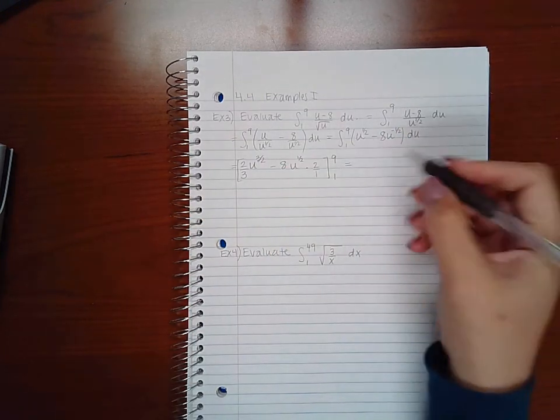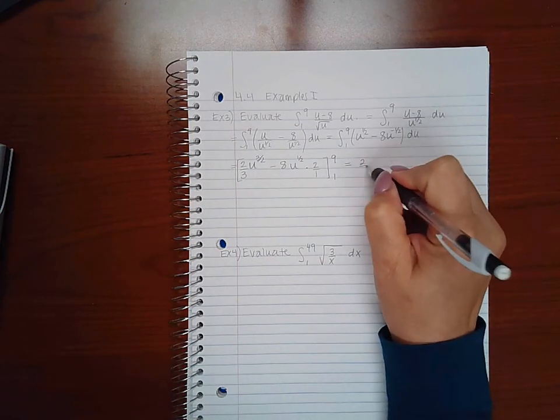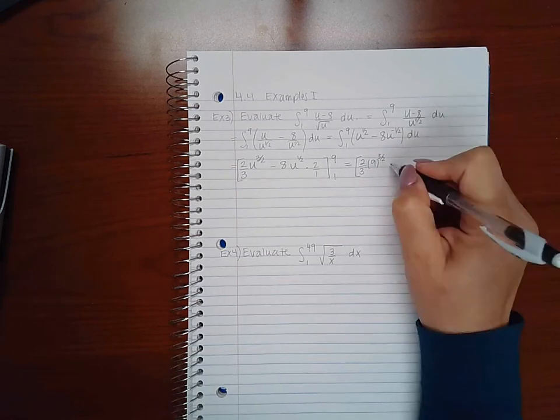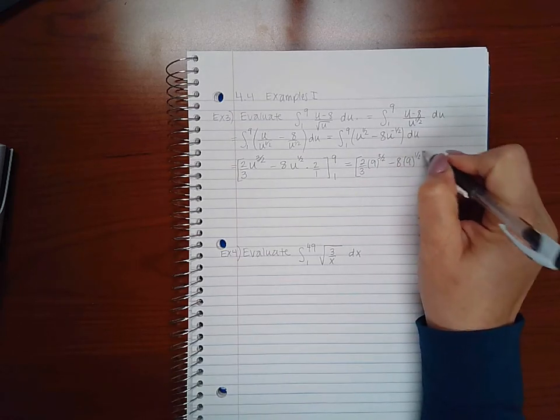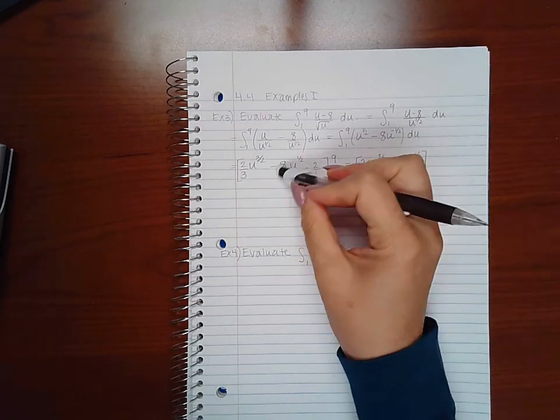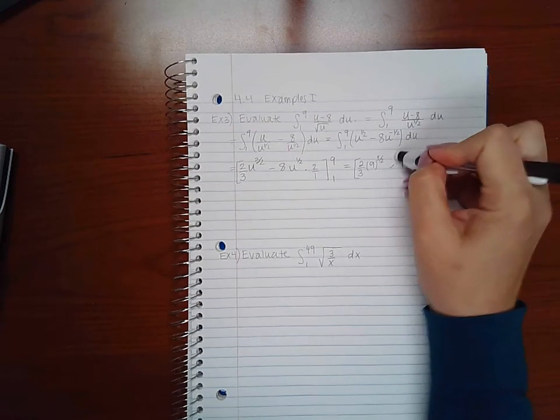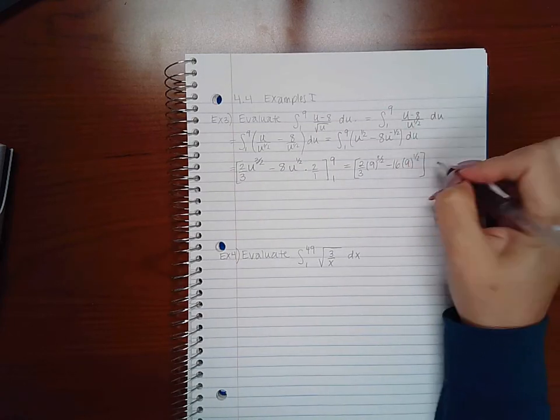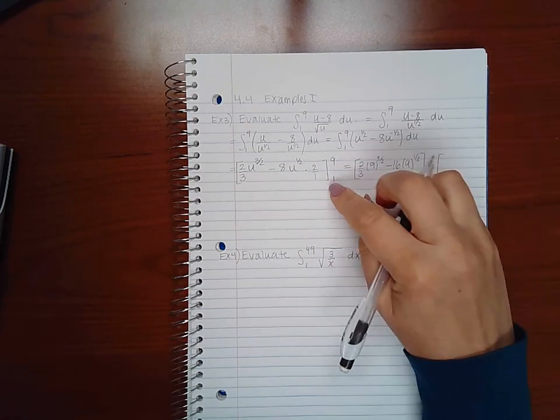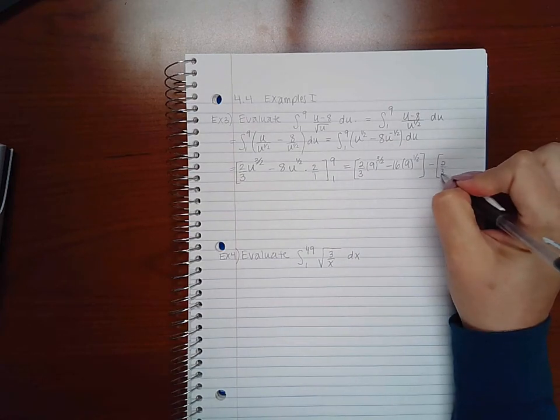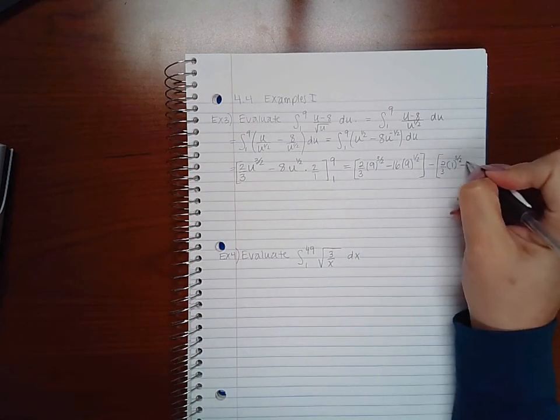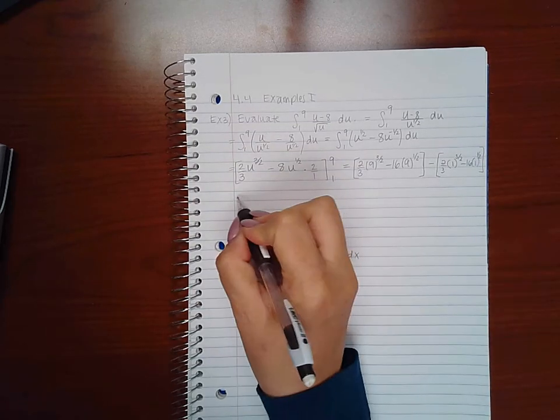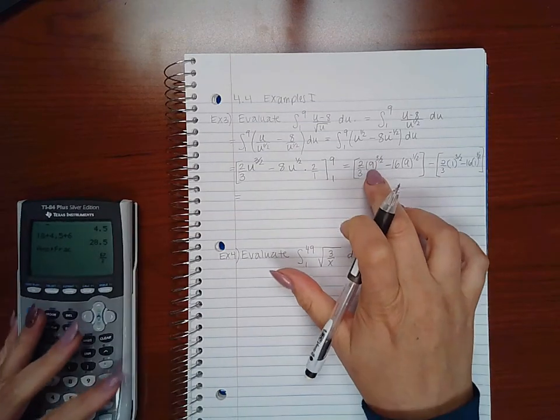Because they just go away. So here we'll get 2 thirds, 9 to the 3 halves, minus 8, 9 to the 1 half. Oh, that won't be 8. That'll actually be 16. And then minus what we get when we plug in 1. So 2 thirds times 1, and then 16 times 1 to the 1 half.